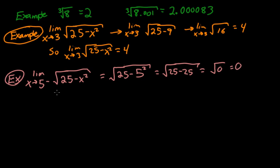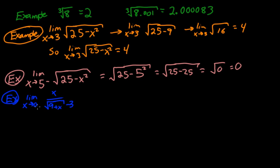Besides having one-sided limits, sometimes we will have to rationalize the denominator to make this work. Here's an example of rationalizing the denominator. Let's say we have the limit as x approaches 0 of x divided by the square root of 9 plus x minus 3. If you plug in 0, we get a 0 in the denominator and a 0 in the numerator — so it would be 0 over 0, which algebraically is not useful for us. So what we do is rationalize the denominator.